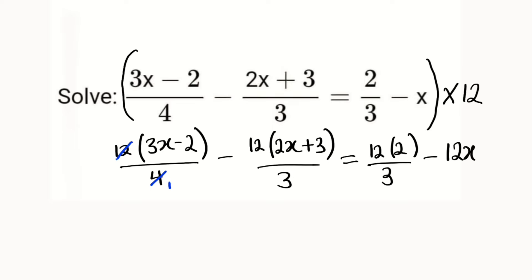I'll do it step by step. This becomes 3 multiplied by (3x - 2). Then we have minus here. 3 can go into 12 four times, so we have 4 in brackets: 4 multiplied by (2x + 3).